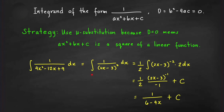We evaluate this integral by substitution. Write it as (1/2) times the integral of (2x − 3)^(−2). Let u = 2x − 3, so du = 2 dx — that is why we multiplied by 1/2. This becomes the integral of u^(−2) du, which equals u^(−1) / (−1) + C. Substituting back and simplifying gives 1 over (6 − 4x) + C.